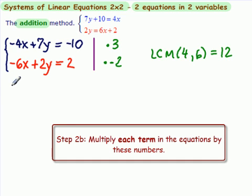So, let's multiply. The first one is a positive, so none of the signs change. 3 times minus 4 is minus 12. x plus 3 times 7 is 21. y equals 3 times minus 10 is minus 30.